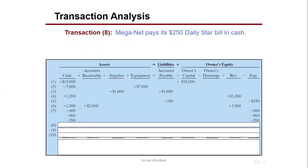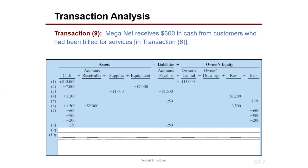Transaction 8: MEGANET pays its $250 Daily Star advertising bill in cash. Recall in transaction 5 we owed $250. Now that we've paid, cash decreases by $250 and accounts payable also decreases by $250, since we no longer owe the Daily Star.